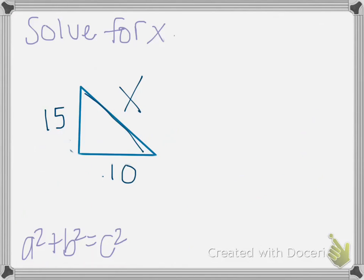Next, we'll go over solving for the Pythagorean theorem. So for this problem, we're going to let 10 equal A and 15 equal B. They could be vice versa, as long as A and B are equal to your legs and C is equal to your hypotenuse.